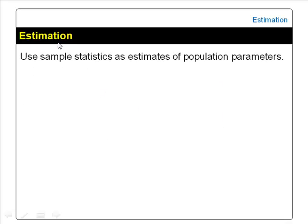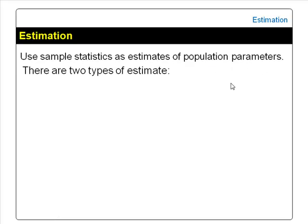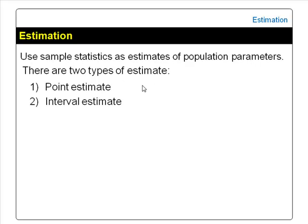In estimation, we use the sample statistics obtained from a sample as estimates of the population parameters. There are two types of estimates: point estimates and interval estimates.